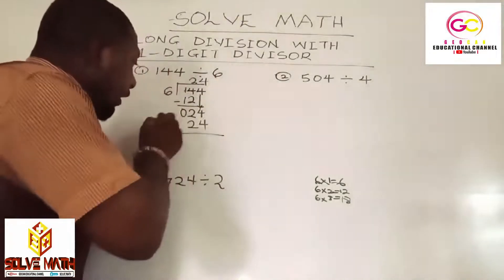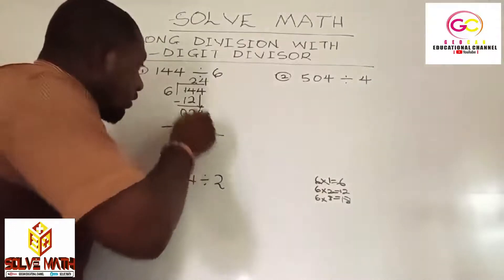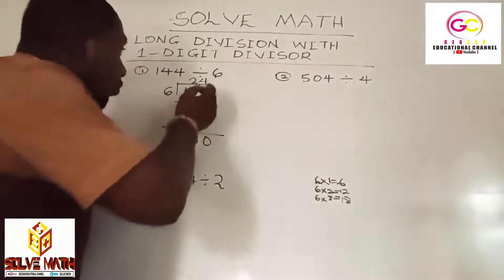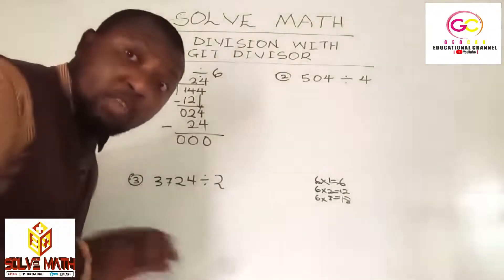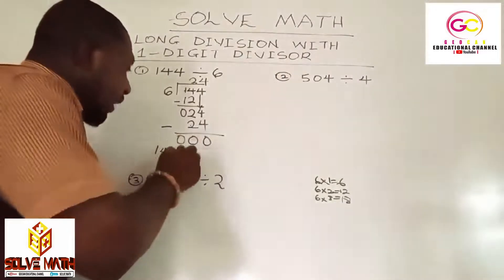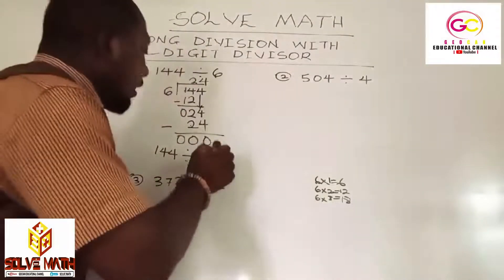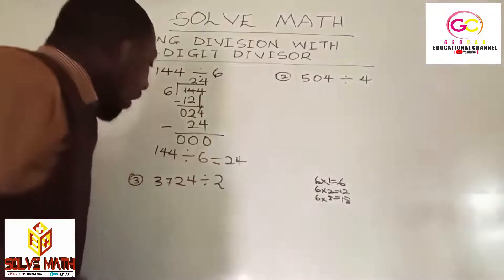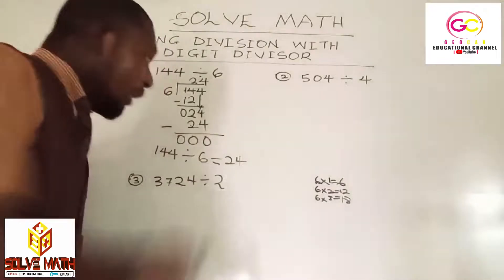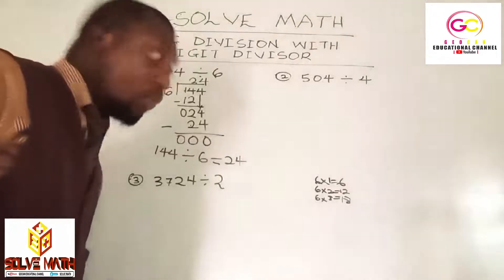Nicely written. Quickly do your subtraction: 4 minus 4 is 0, 2 minus 2 is 0, 0 minus nothing is 0. Do we have any more digits? No, we are done. What it means is that 144 divided by 6 is equal to 24. If you have 144 oranges and you are sharing them to 6 people, each person will get 24 oranges.